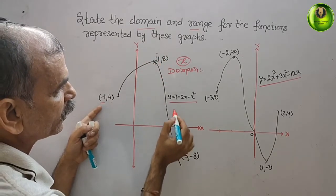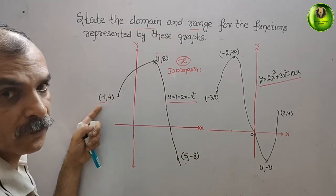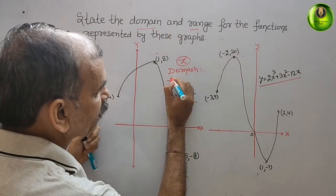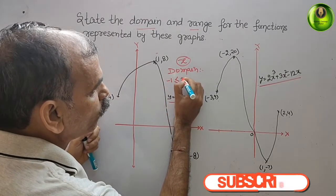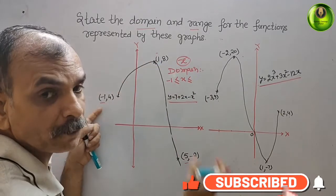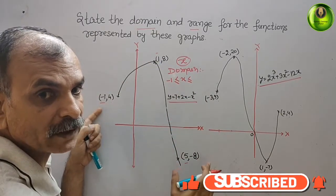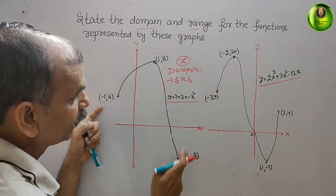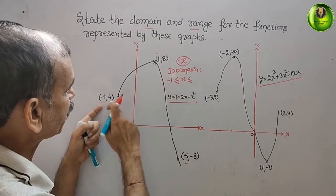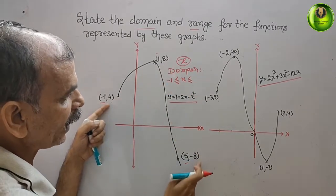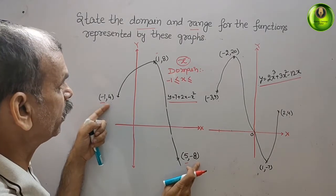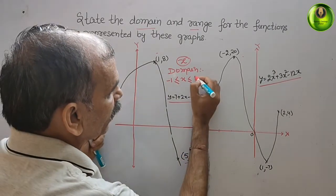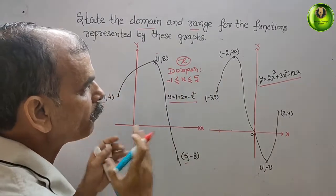The x values are minus 1, 1, and 5. The minimum value is minus 1, so we write the domain as minus 1 less than or equal to x less than or equal to 5. The x values lie from minus 1 to 5.